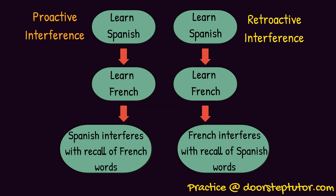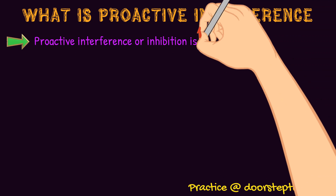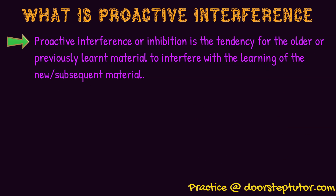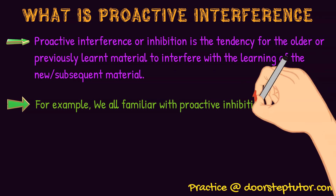In this slide there is a diagrammatic representation of proactive and retroactive interference. Proactive interference, also called proactive inhibition, is the tendency for older or previously learned material to interfere with the learning of new or subsequent material. In the earlier example, the student learned French first, then Spanish. If the French language interferes with the acquisition of Spanish, then proactive interference has occurred.